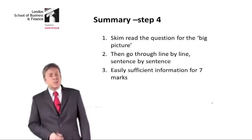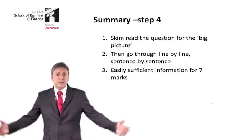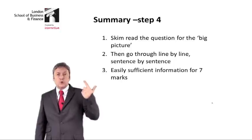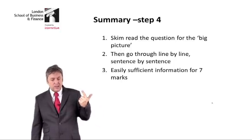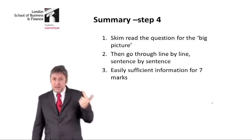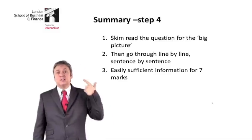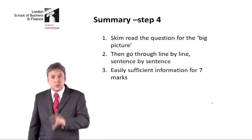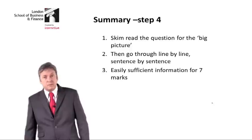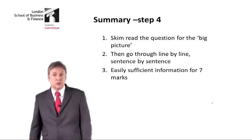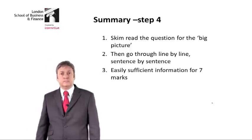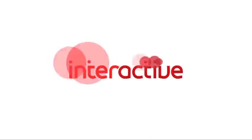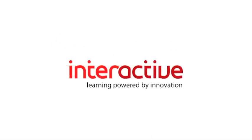So, a summary. Step four: reading the narrative. Skim read the question to get the big picture. Go through line by line, sentence by sentence. There is easily sufficient information for a seven mark answer. If you don't get five or six marks here, you should be kicking yourself. Let's go through line by line, sentence by sentence.